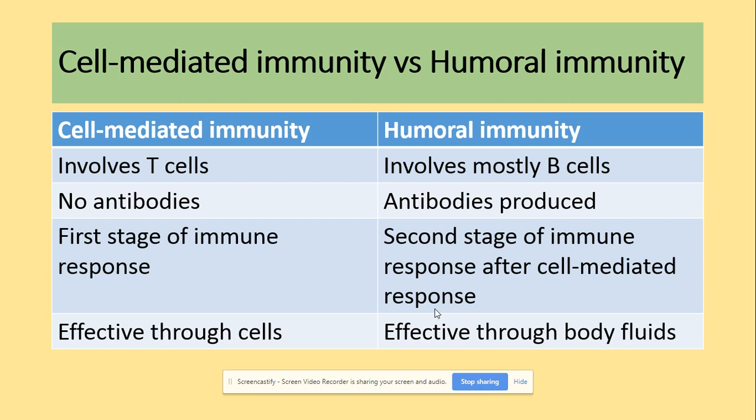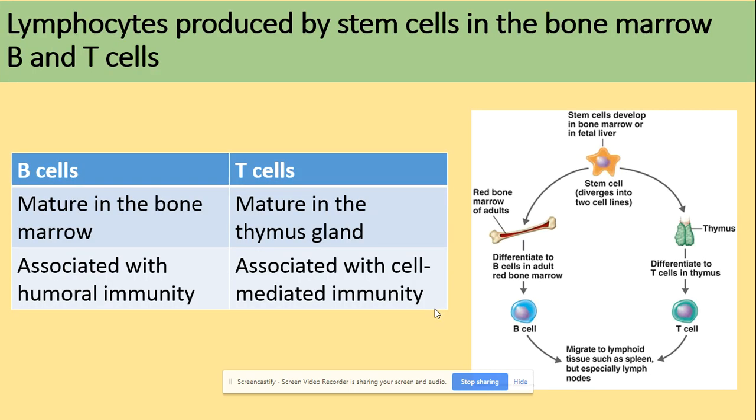The term 'cell-mediated immunity' comes from the fact that T cells act through cells, whereas humoral immunity acts through body fluids. The main difference between B cells and T cells is where they are produced and where they develop. Both are produced by stem cells — B cells develop in the bone marrow and T cells develop in the thymus gland.